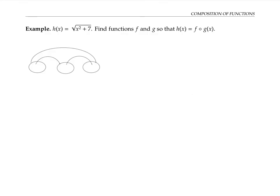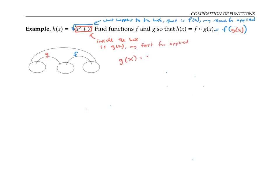In this last set of examples, we're asked to go backwards: given a formula for h of x, we're supposed to rewrite h of x as a composition of two functions f and g. In f composed with g of x, that means f of g of x — since we evaluate from the inside out, g is applied first, then f. To figure out what f and g could be, I draw a box around something inside the expression for h. I'll box x squared plus seven — whatever's inside the box is my function g of x, the first function applied. Whatever happens to the box — in this case, taking the square root — becomes my outside function f. So g of x equals x squared plus seven, and f of x equals the square root of x.